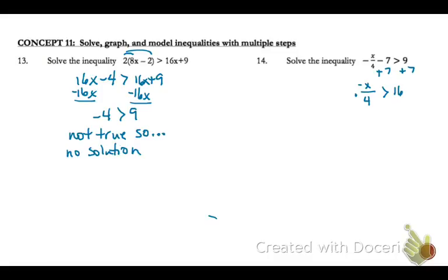Now we need to undo this division by negative 4, so we're going to multiply each side by negative 4. So that will become positive x. When we multiply each side by a negative, we need to reverse the inequality and then negative 64.